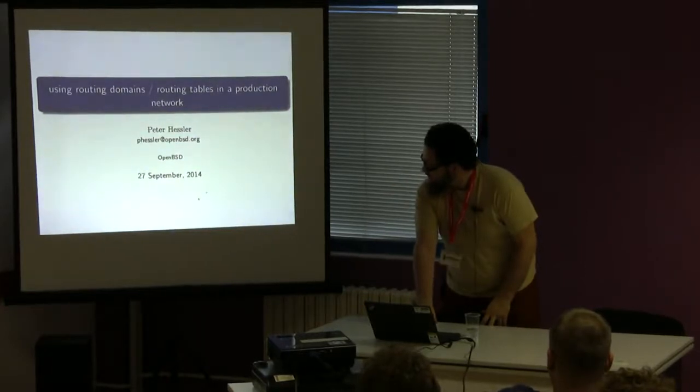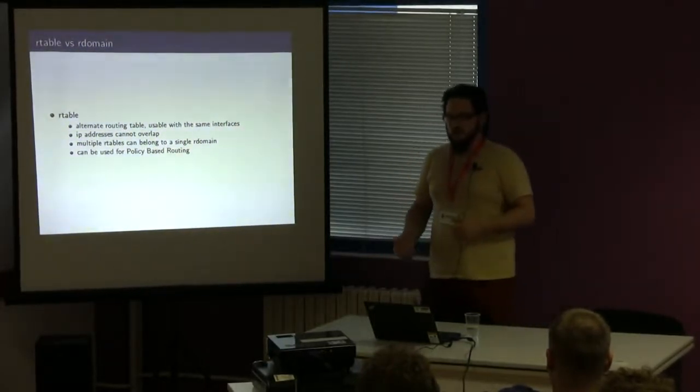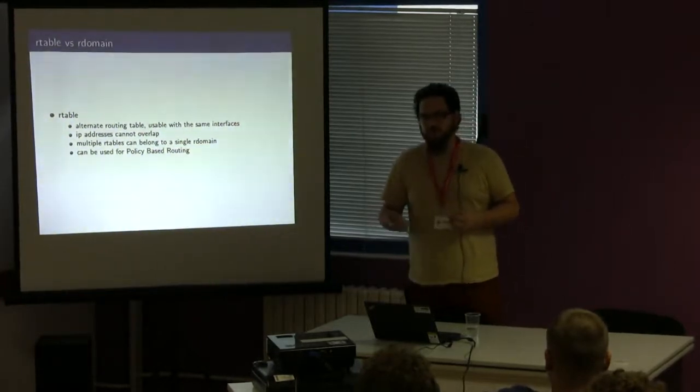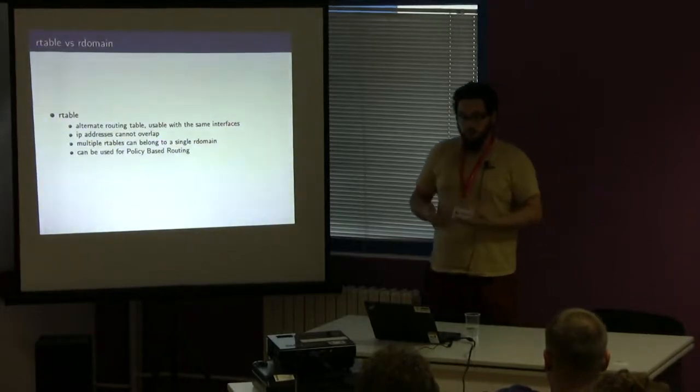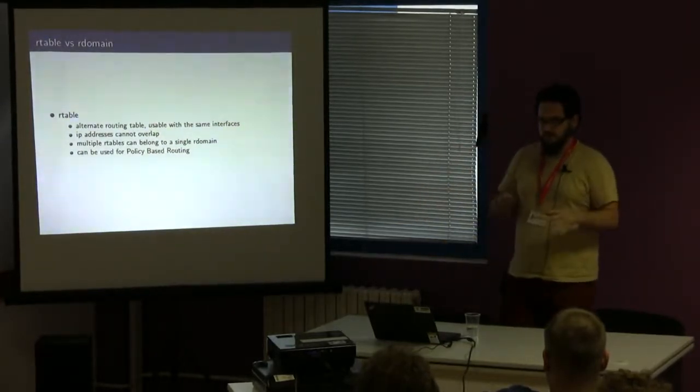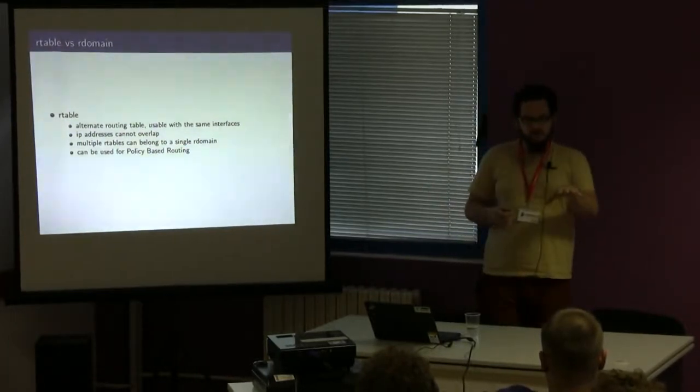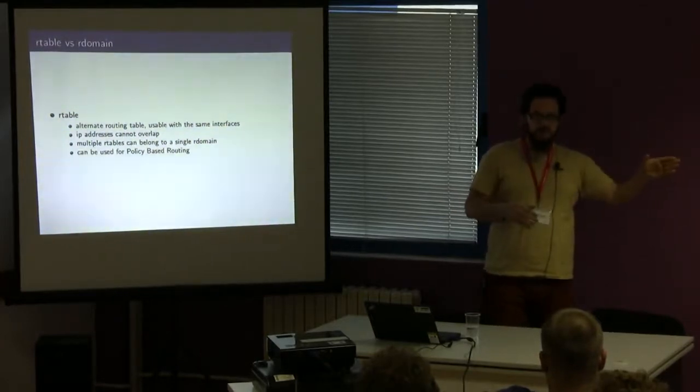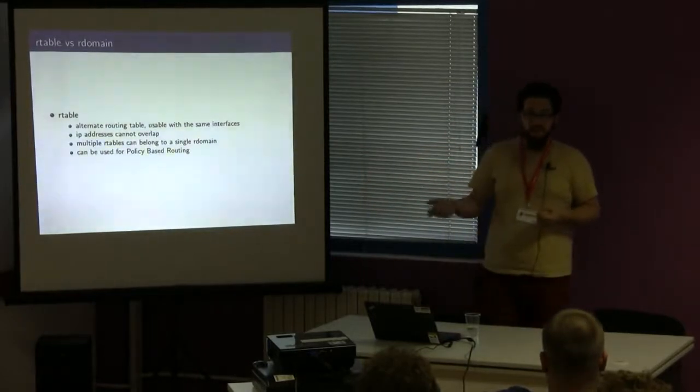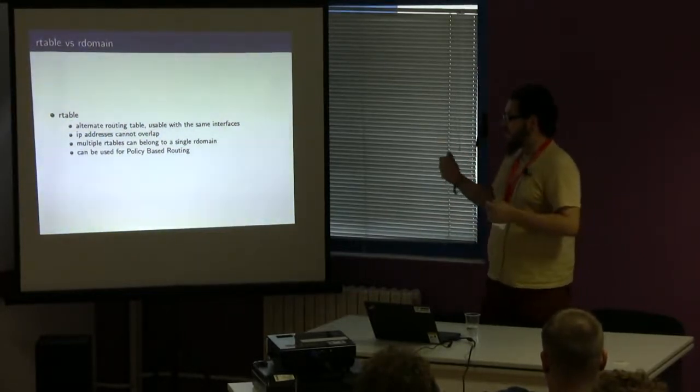So we'll just start off. There's always a question of what is an R-table and what is an R-domain. A routing table was the first thing that we added. This was support for an alternate routing table that would be used. This could be just simply an overlay on top of what was already in the system. You could not have conflicting IP addresses in this. It was only for routes to different places over different links.